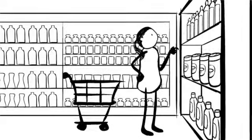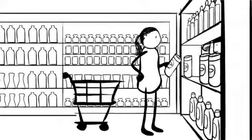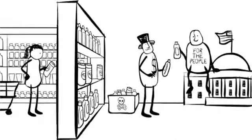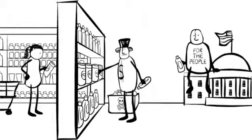It turns out the important decisions don't happen when I choose to take a product off the shelf. They happen when companies and governments decide what products should go on the shelves.